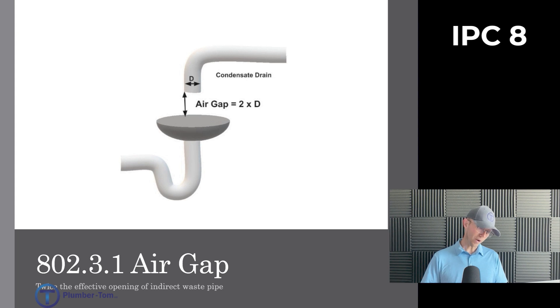The air gap between the indirect waste pipe and the flood level rim of the waste receptor shall be not less than twice the effective opening of the indirect waste pipe. So we get this formula: air gap equals two times the diameter of the indirect waste pipe or the pipe that's dumping into the floor drain or floor sink.